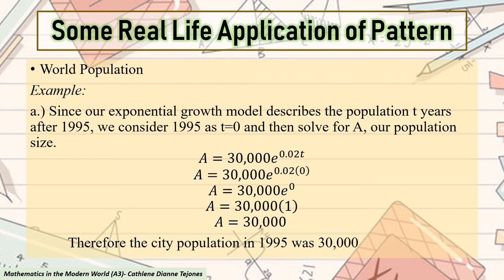First, let us answer the first question. What is the population in 1995? Since our exponential growth model describes the population T years after 1995, we consider 1995 as T = 0, since no years have passed yet. And then, solve for A, which is our population size. Since the formula is given, we will use that. A = 30,000e^(0.02T).